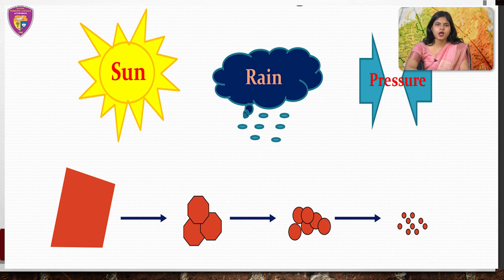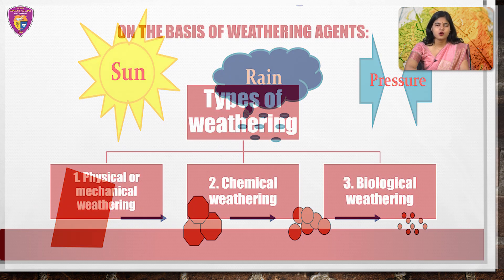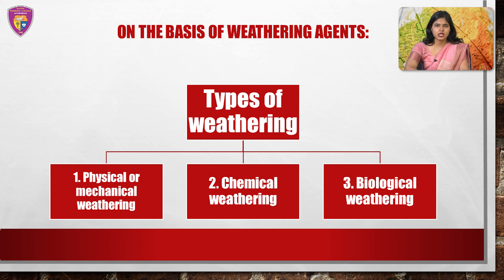Weathering occurs due to the action of weathering agents: moisture, water, frost, insolation and wind as physical agents; oxygen, carbon dioxide, hydrogen etc. as chemical agents; and biological organisms as biological weathering agents. On the basis of these weathering agents, weathering has been classified into three major types: physical or mechanical weathering, chemical weathering, and biological weathering.